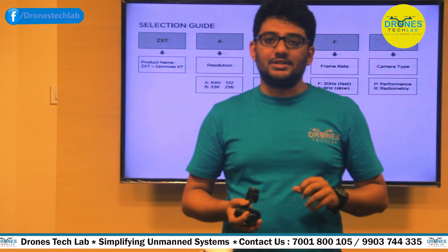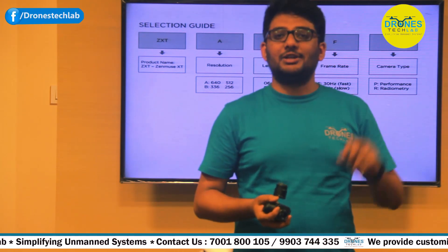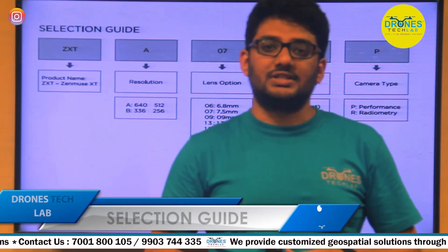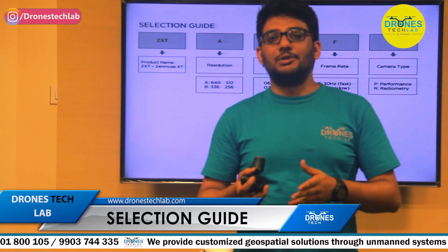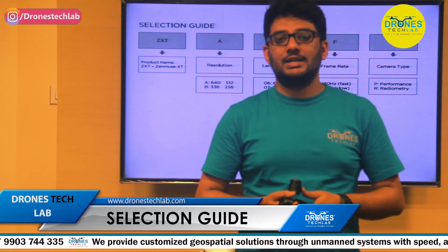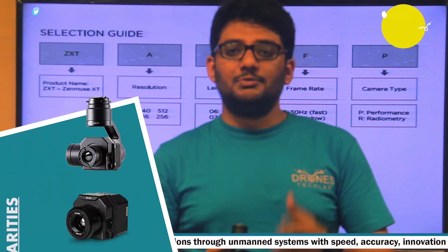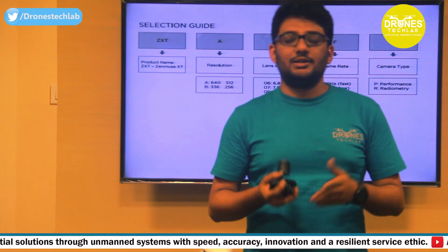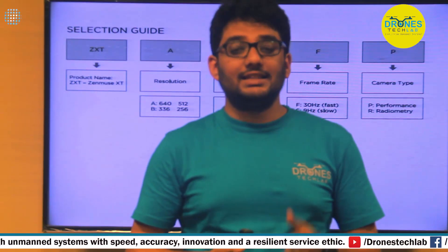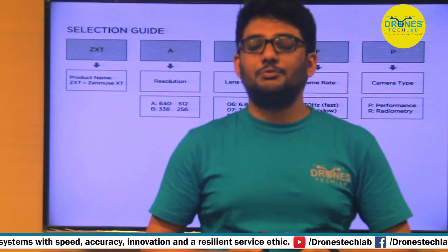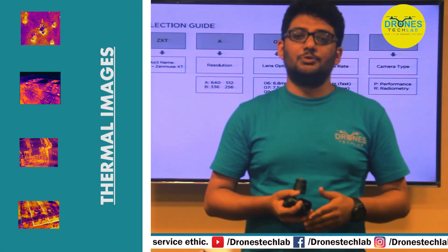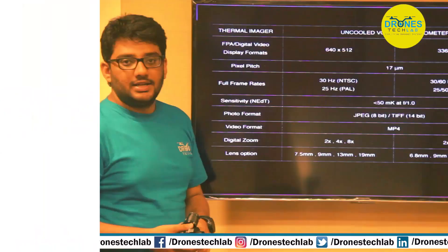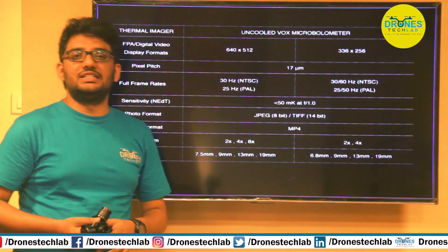The Radiometry camera is useful for the thermal engineer, while the Performance camera is useful for the firefighter for detecting the temperature gradient during rescue operations. Both cameras share similarities: they both have a spot meter, and the image quality is quite similar. However, differences lie in thermal precision and the pixel-to-pixel count of the Radiometry camera, which makes it higher in cost.